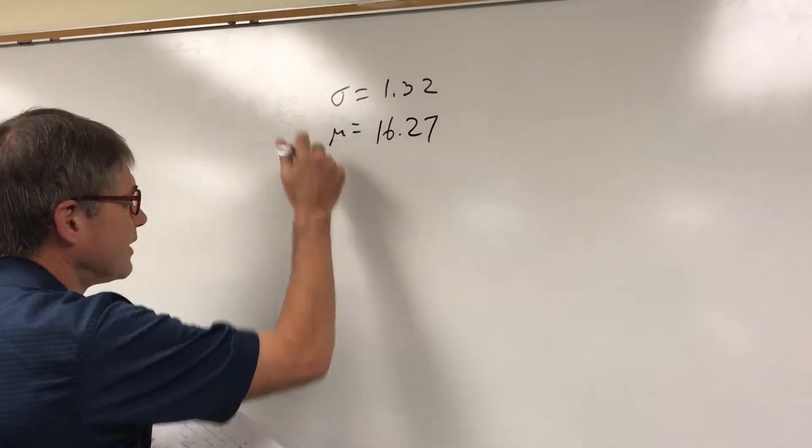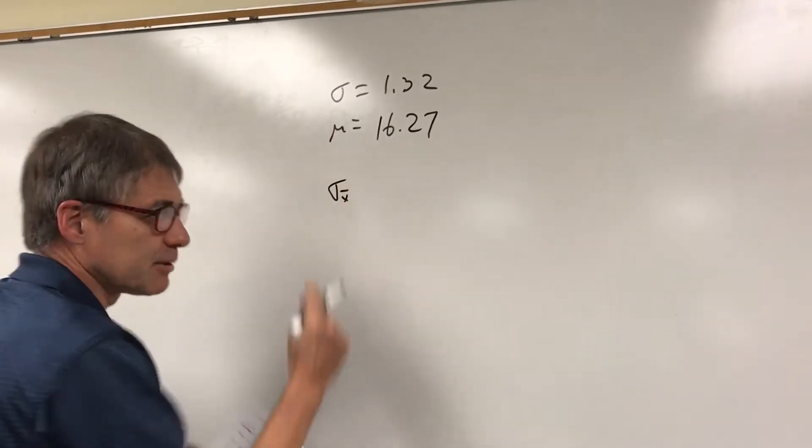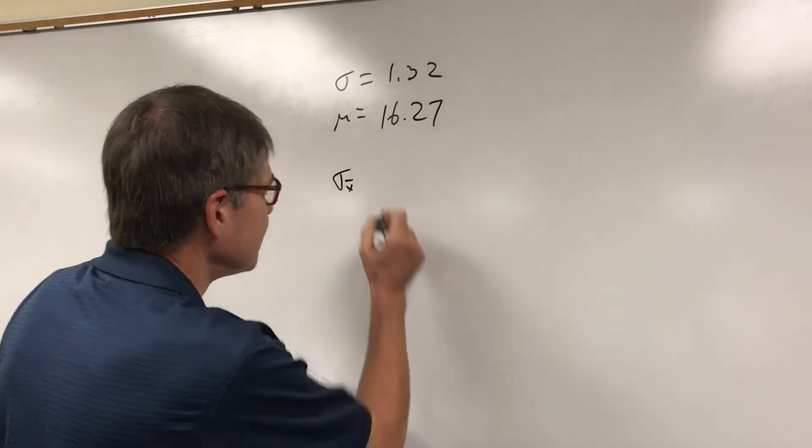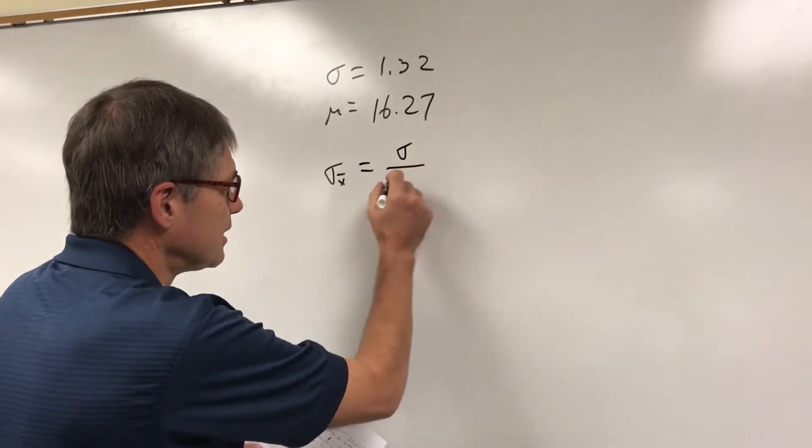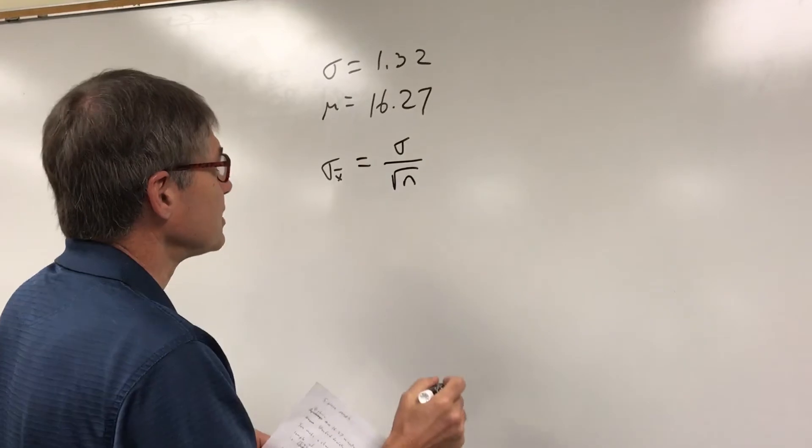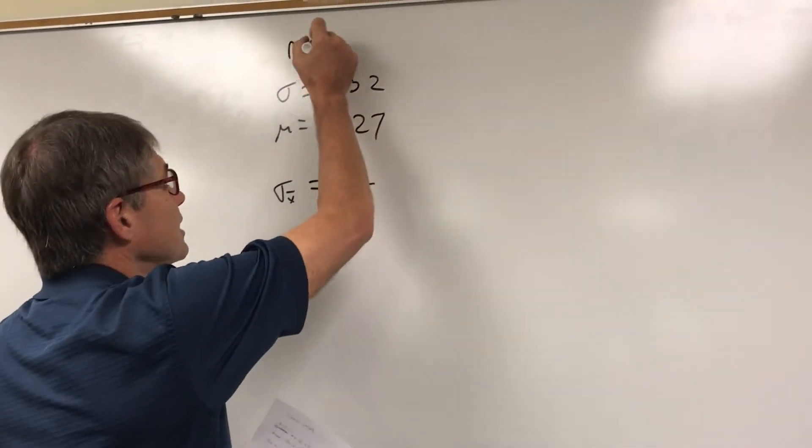Instead of using the standard deviation I'm going to do what's called the standard deviation of the means which comes from the central limit theorem. The way we do that is you take the historic standard deviation divided by our sample size. In this case I said our sample size is five.